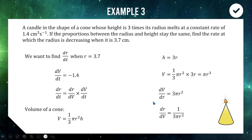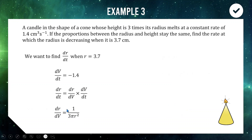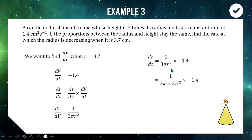We actually want dr/dV, so we take the reciprocal: dr/dV = 1/(3πr²). Now we have all the pieces. dr/dt = (1/(3πr²)) × (−1.4). Setting r = 3.7 and putting this through a calculator gives approximately −0.01 centimetres per second. So when the radius is 3.7, the radius is decreasing at a rate of 0.01 centimetres per second — about a hundredth of a centimetre per second.